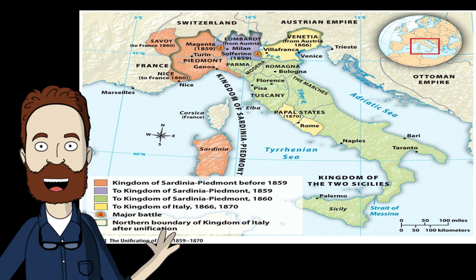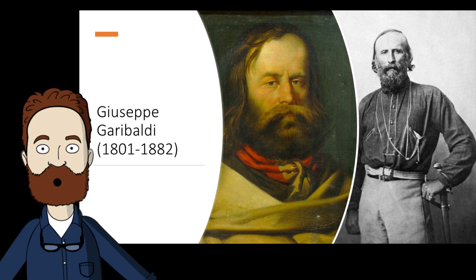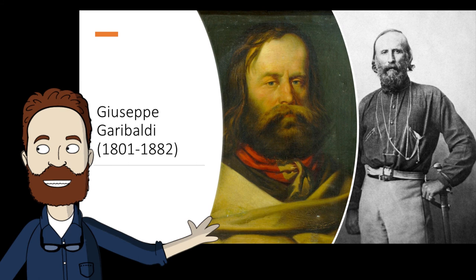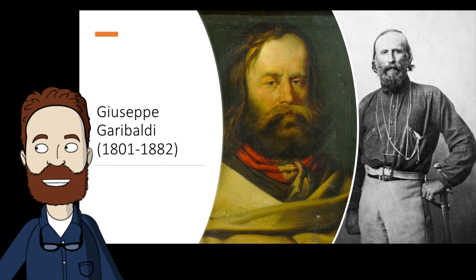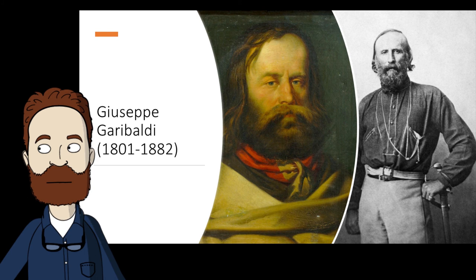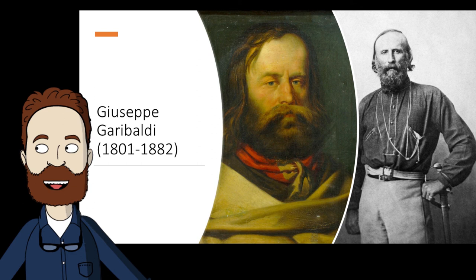In the 1859 war, after the conquest of Lombardy, Napoleon III withdrew — fearing ultimate defeat and afraid of antagonizing the Catholics in his own country by aiding the avowedly anti-clerical Sardinian government. Sardinia was only able to make small gains but aroused nationalist fervor in other northern Italian states.